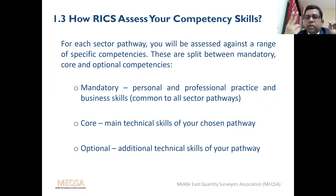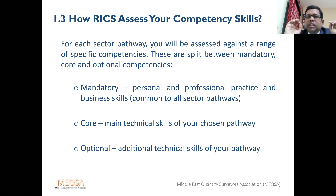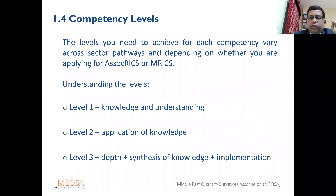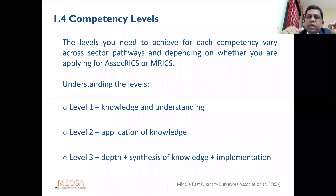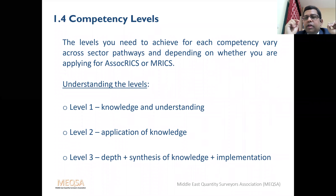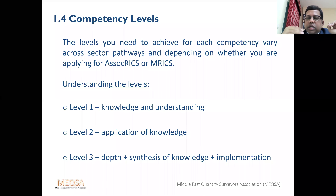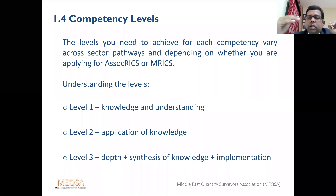In technical competencies there are two types: core competencies, which you must do all of, and optional competencies, where RICS gives you options from which you can select any two. Before coming to QS and construction, we need to understand the levels of competency. There are three levels: level one, level two, and level three. The levels required depend on which pathway and whether you want associate RICS or MRICS.